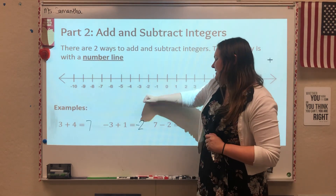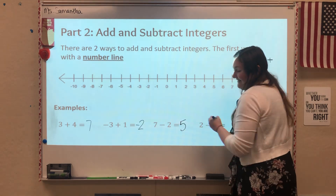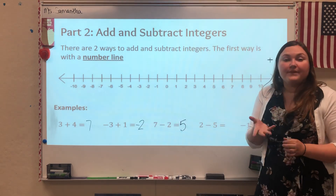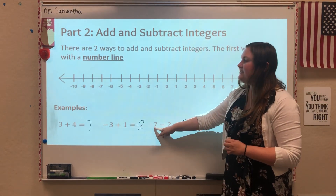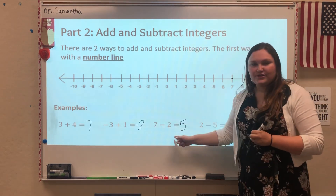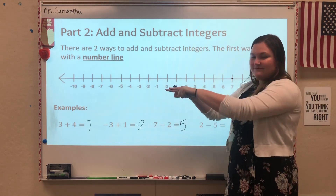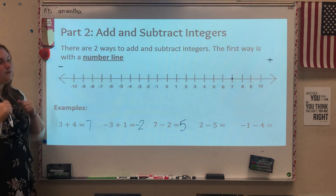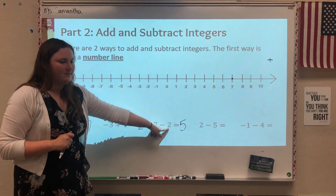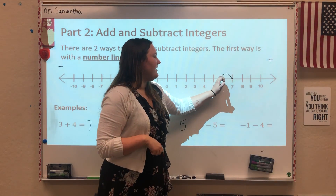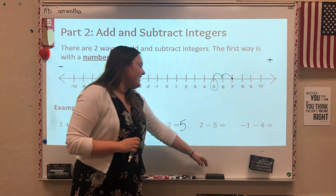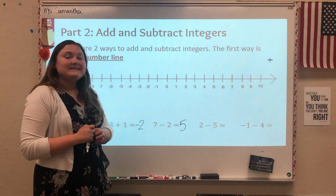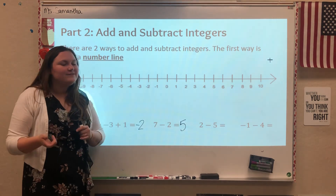This next one: 7 minus 2. I know you know the answer is 5, but how could you show that on a number line? Just like the first two, I'm going to start at the first number — 7. If I want to subtract 2, subtracting something makes it smaller, so I want to go towards the smaller numbers, towards the negative. I put a minus sign there to remind myself I'm going this way. I subtract 2 by counting backwards: 1, 2. That shows me the answer is 5. At some point you might have been told 2 minus 5 — you can't do that. You actually can; it just means it's going to be negative.